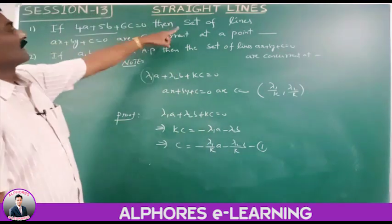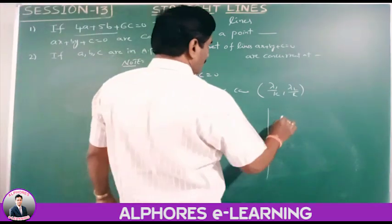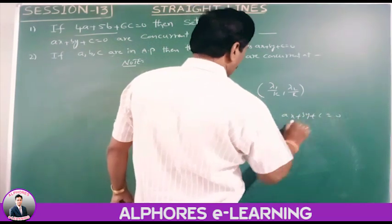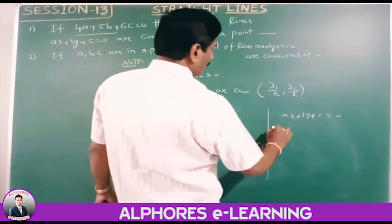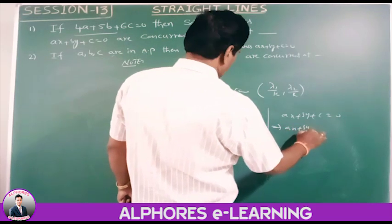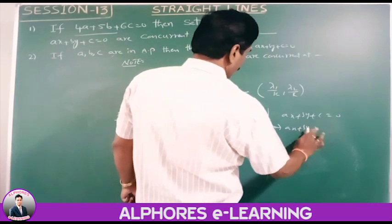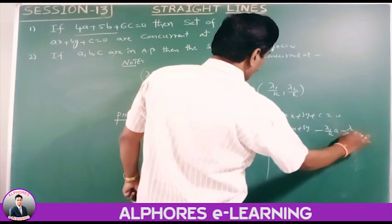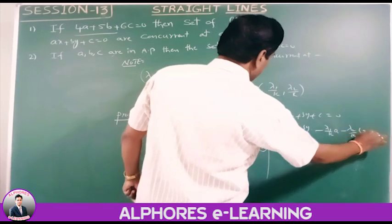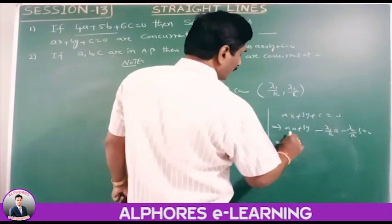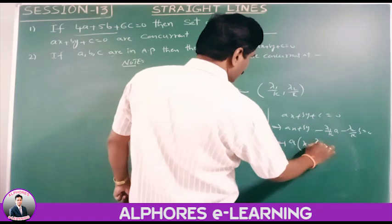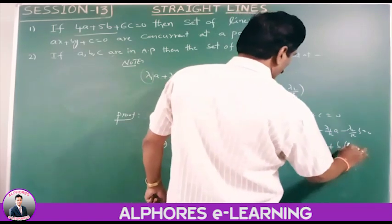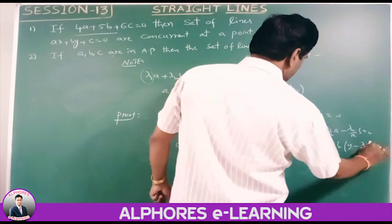Substituting into ax plus by plus c equals 0: ax plus by plus [minus(lambda-1/k)·a minus (lambda-2/k)·b] equals 0. Here 'a' is the common term, giving a(x minus lambda-1/k) plus b(y minus lambda-2/k) equals 0.